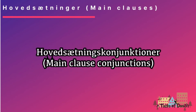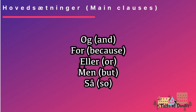Hålsetningskonjunktioner - main clause conjunctions. There are only five main clause conjunctions. By remembering these conjunctions, you can ensure you have the correct word order. The five conjunctions are: og, for, ila, men, så. If you join two sentences using one of these conjunctions, this tells you that you have two main clauses and thus your word order needs to be subject, verb, adverb in both cases.